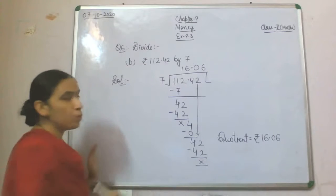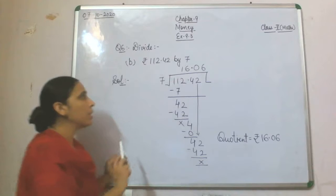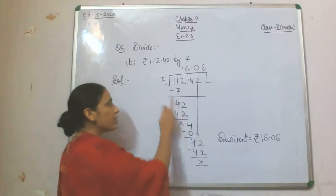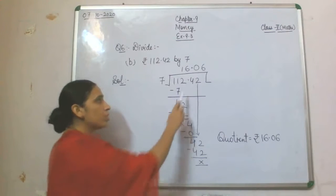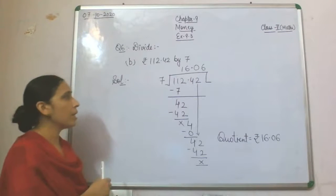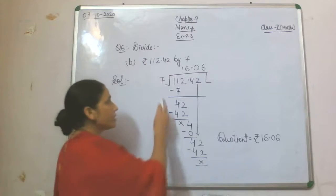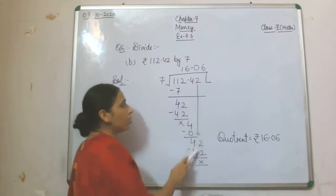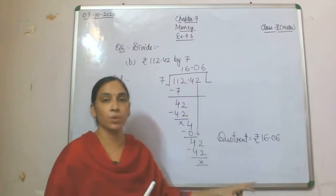Now 112.42 is to be divided by 7. We write it in division form. 7 ones are 7, 4 remaining. 2 gets down. 7 sixes are 42, nothing remaining. We got the point, so the point goes into the quotient. 4 gets down. Because 4 is smaller than 7, 7 zeros are 0, 4 remaining. 2 gets down. 7 sixes are 42. So the quotient is 16.06.